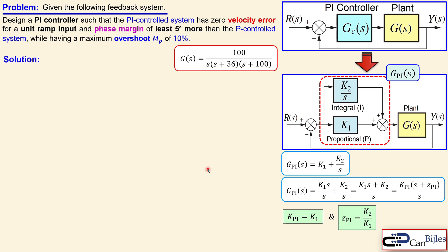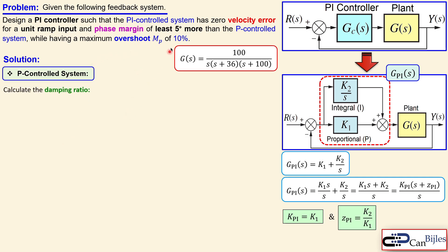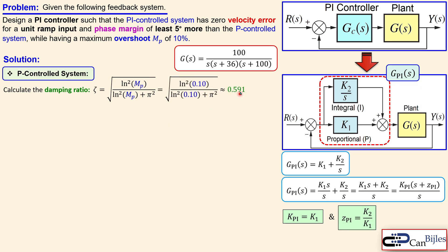Let's move on to the solutions. We start first with the P controlled system because that is our reference, and then we need at least 5 degrees more phase margin in the PI control system, of course keeping the maximum overshoot. We start with the overshoot specification of 10 percent and for that we need this formula, assuming a pure second order system. We will later adjust by adding some extra phase safety margin. The damping ratio zeta is calculated using this formula — M_P here is in scalar form so 0.10 — and substituting the values gives approximately 0.591.